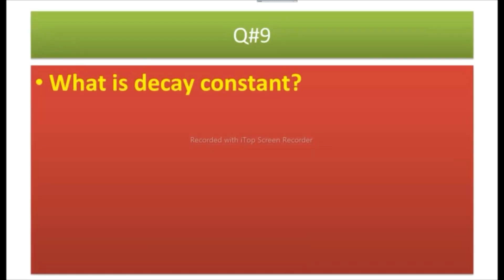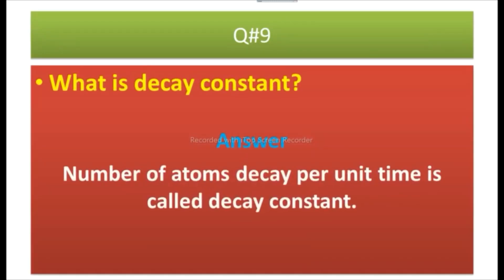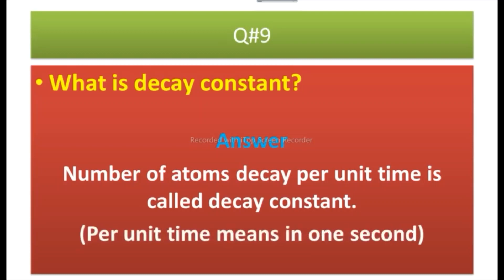Question number nine: What is decay constant? Answer: The number of atoms that decay per unit time is called the decay constant. Per unit time means in one second.